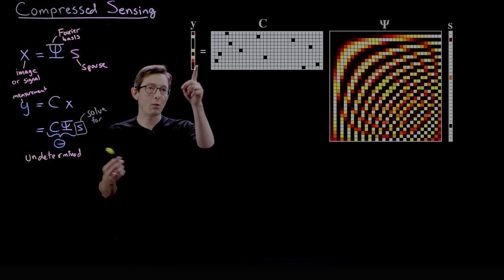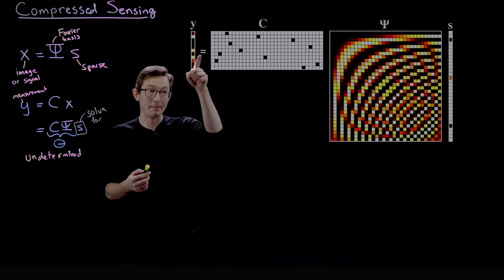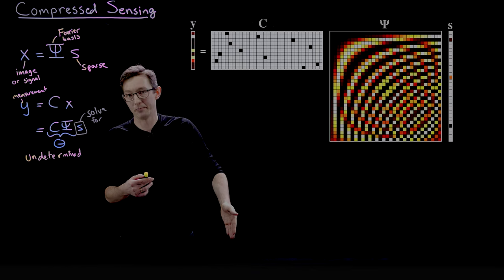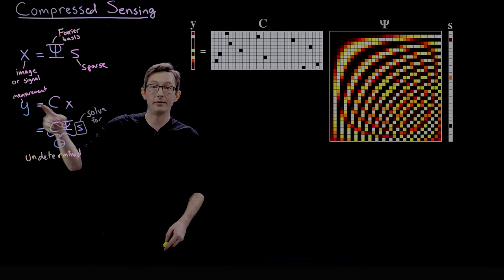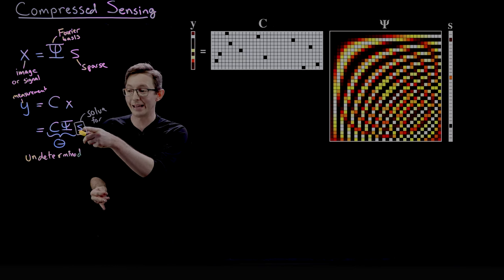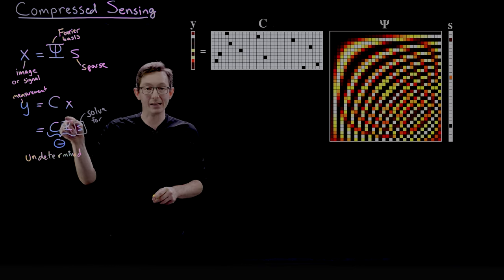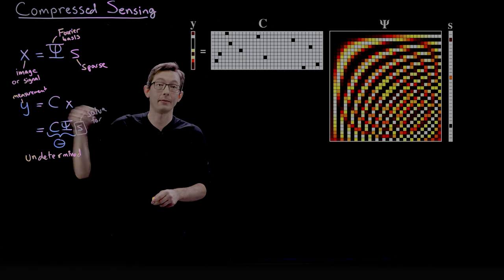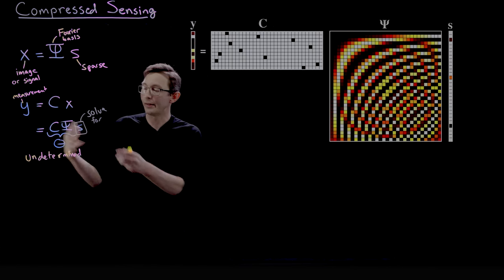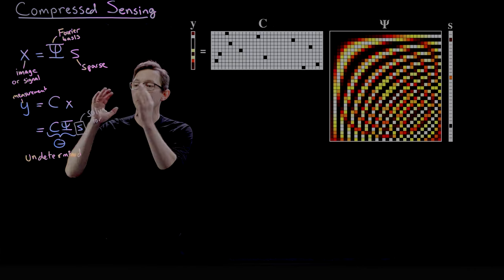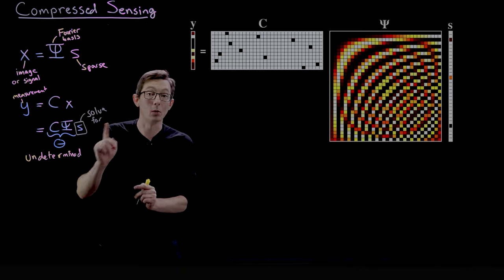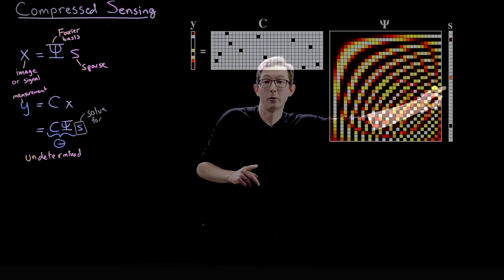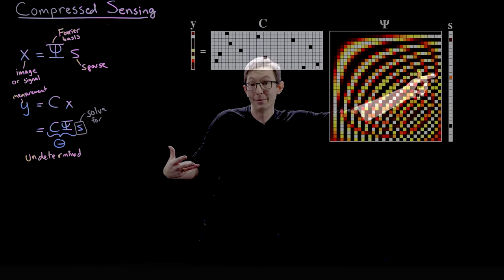Now there are, this y vector has only a few entries in it. And s might have a million entries. And so there are infinitely many solutions of this system of equations. There's infinitely many s's that when I multiply by C times psi, I will get back this measurement y. And that's what I mean by underdetermined is that out of all of those infinitely many s's, how do I find the right one that is actually the Fourier coefficients of my image?